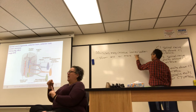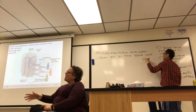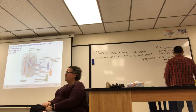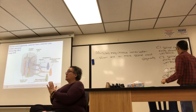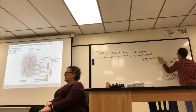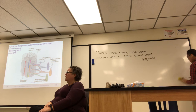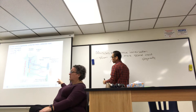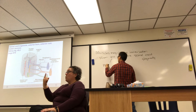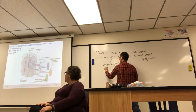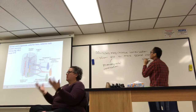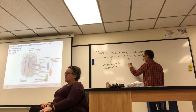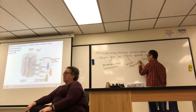If a muscle receives input from one spinal cord segment, that innervation is called mono-segmental muscle innervation. If it receives input from more than one segment, it is called multi-segmental innervation.